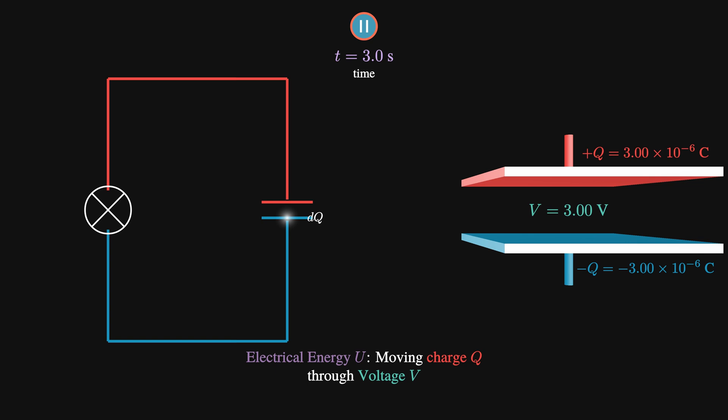Every small amount of charge, which we'll label DQ, moving from one plate to another, goes through a voltage V, which is just the plate voltage at that moment. This results in a small amount of work done, equal to V times DQ.